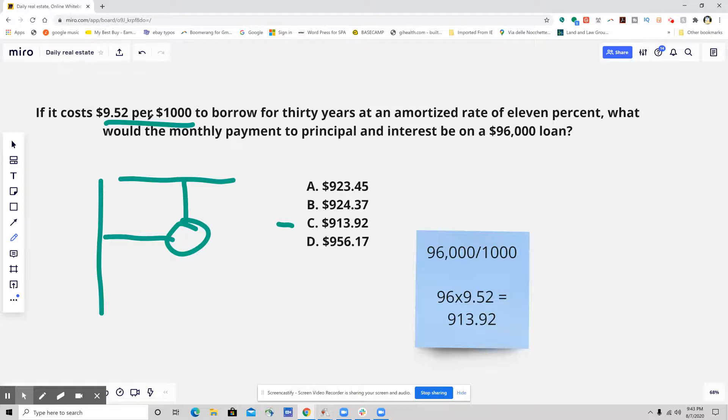Pretty straightforward. And again, if you didn't have that information, you would probably have to go fetch that over at an amortization table. So that's probably what you would be getting on the test.